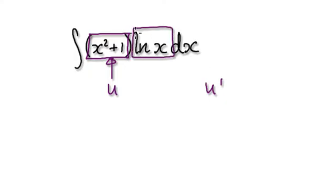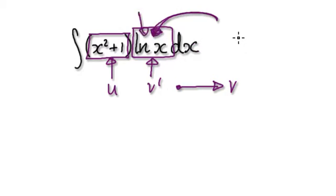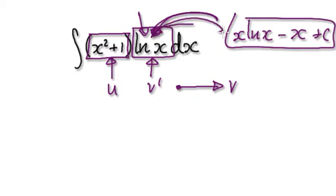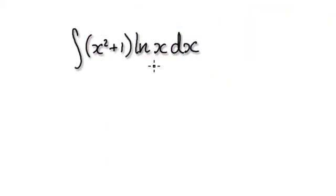But the thing is, if you make this to be your u, then you've got no choice but to make this to be your v prime. And if you make this to be your v prime, later on you're going to have to integrate to get v. You don't want to integrate this, because if you integrate natural log of x, it gives you x·ln(x) minus x — which becomes more complex. So you don't want to make this to be your v prime.